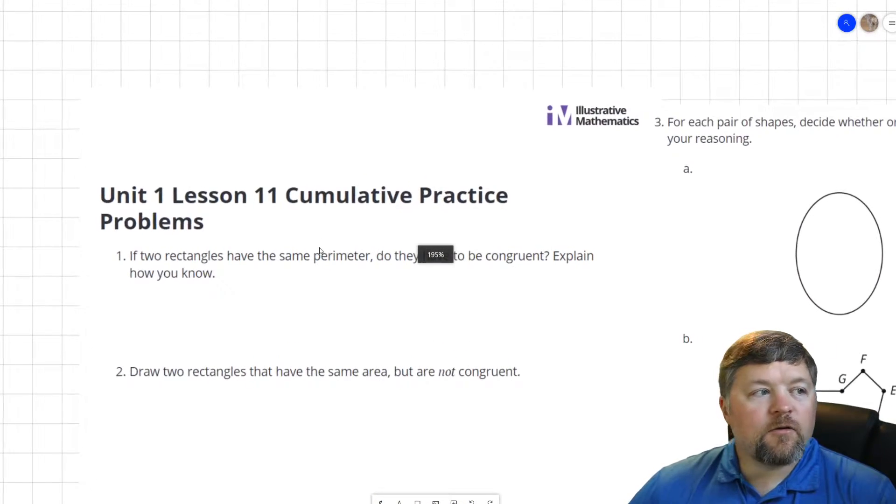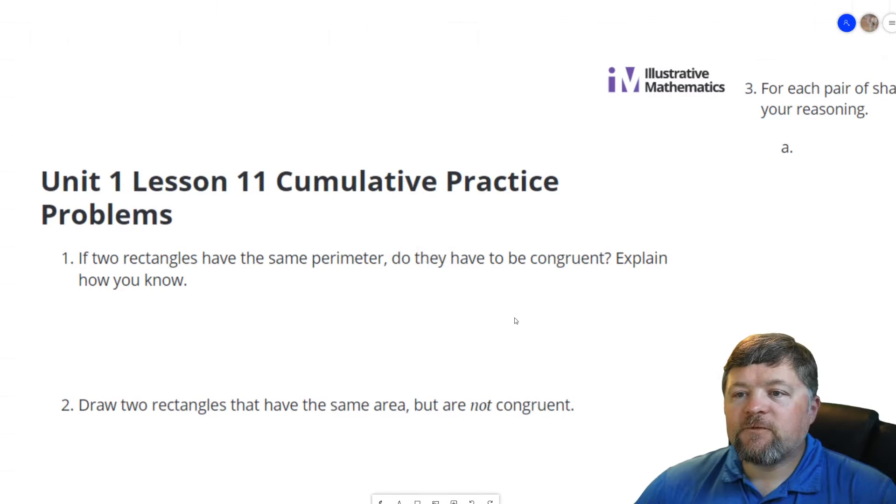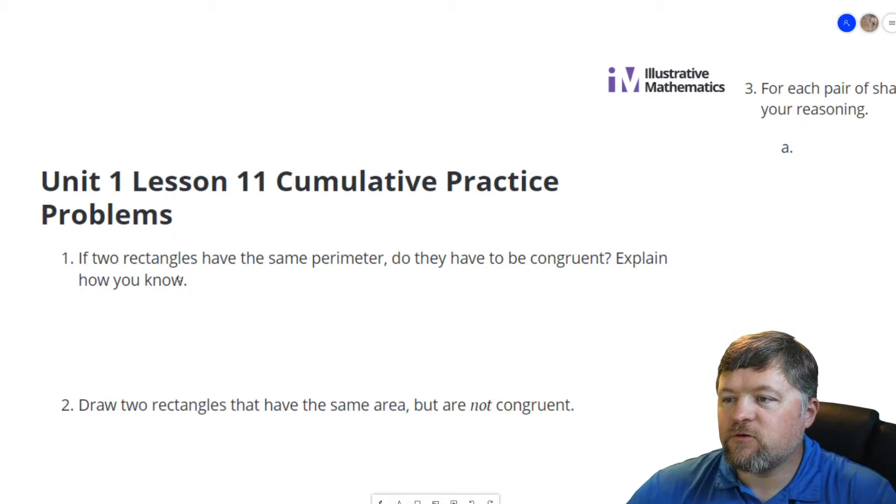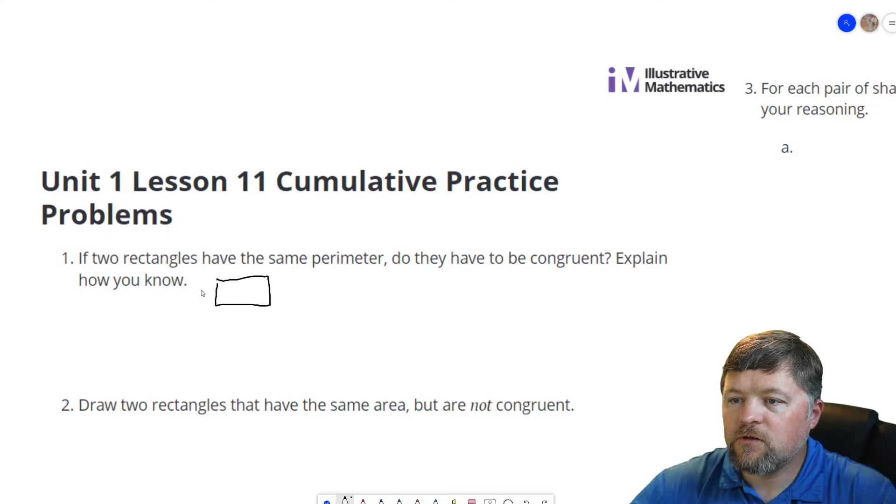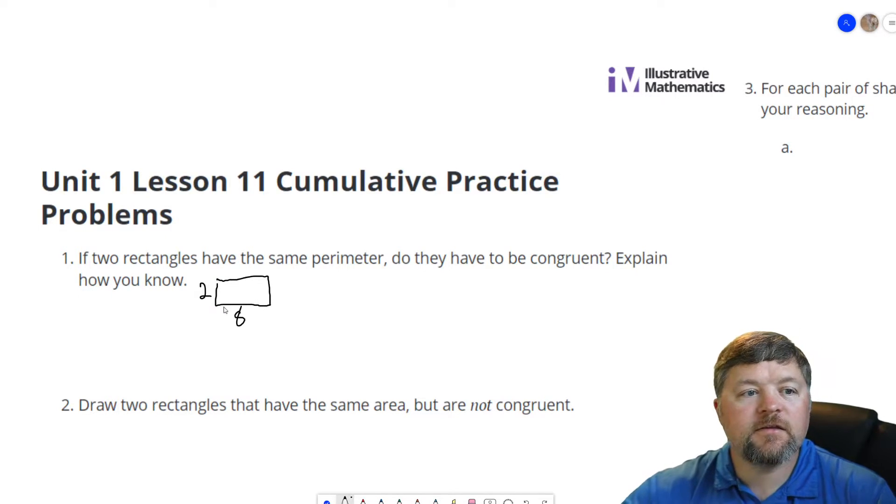Okay, our first problem here says if two rectangles have the same perimeter do they have to be congruent? Explain how you know. No they do not. We could have a rectangle that is 2 by 8. That would have a perimeter of 2 and 8 is 10, 2 and 8 is another 10, 20.